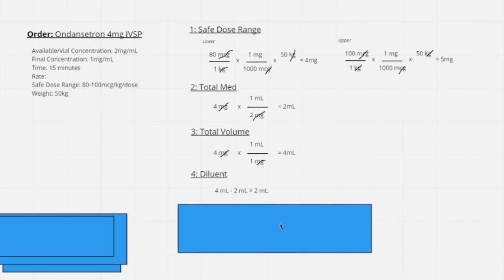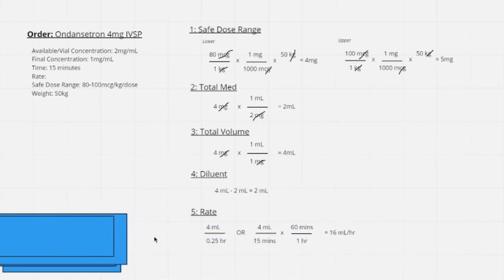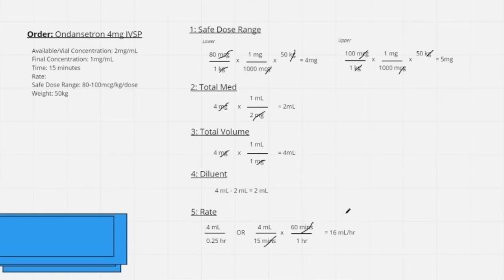Now we calculate our rate. We're giving the mixture — not just the medication or just the diluent — so our total volume is 4 mL. Rate is calculated in mL/hour. There are two ways: you can recognize that 15 minutes is a quarter of an hour (0.25 hours), giving 4 mL ÷ 0.25 hr = 16 mL/hr. Alternatively: (4 mL / 15 min) × (60 min / 1 hr) = 16 milliliters per hour.